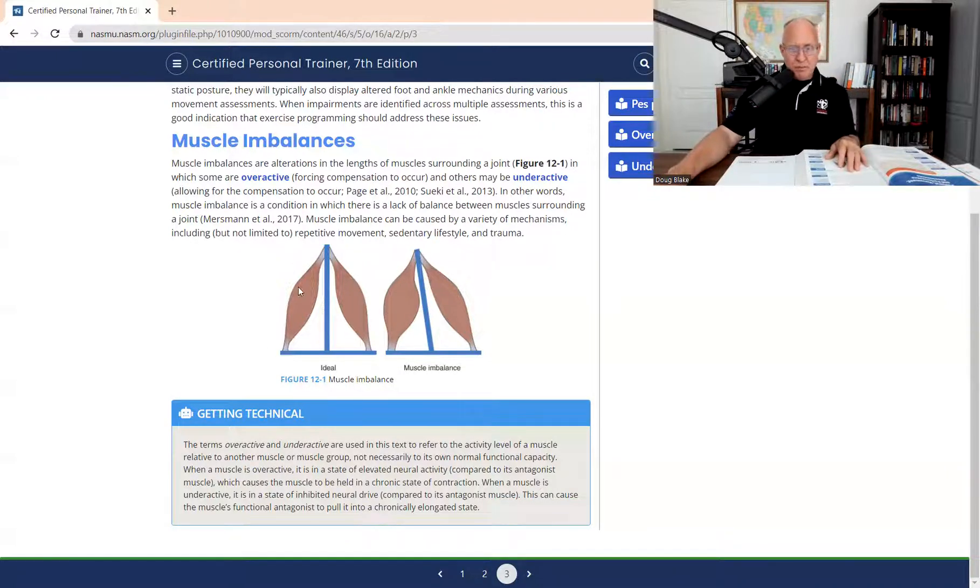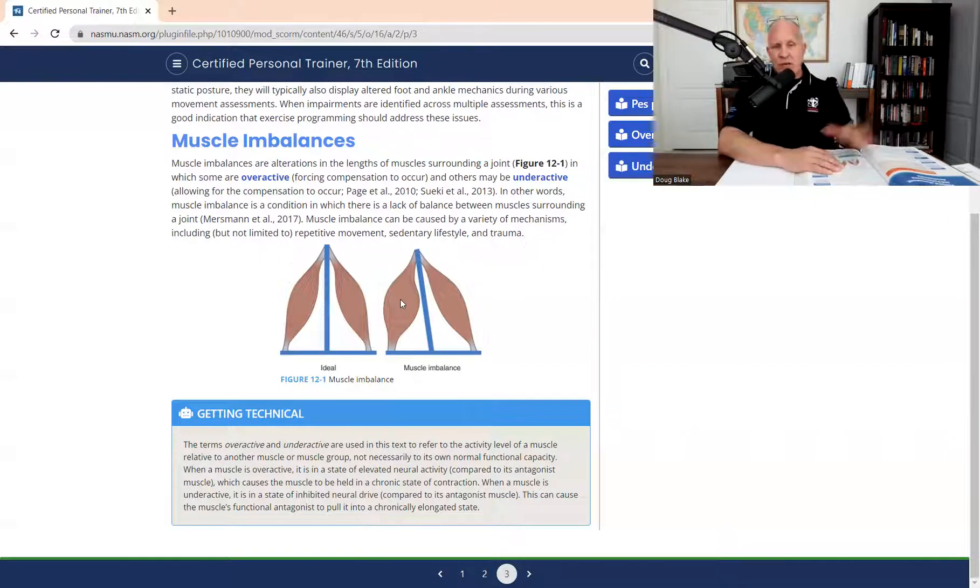this figure muscle imbalance, this is a really good rendition of what we're talking about. It's very simplified, because muscles don't look like this obviously, but the point is, is that what it's showing you is that this guy right here cannot be shortened or overactive without a compensatory underactive antagonist. Now, how does this help you from a memorization standpoint?